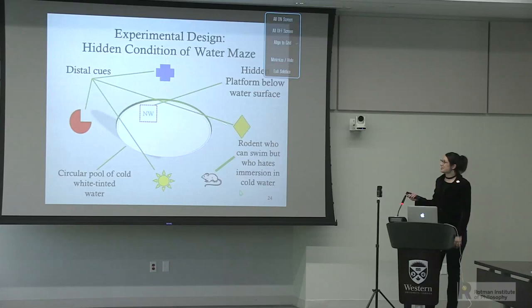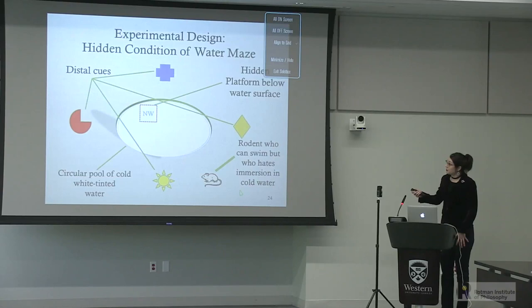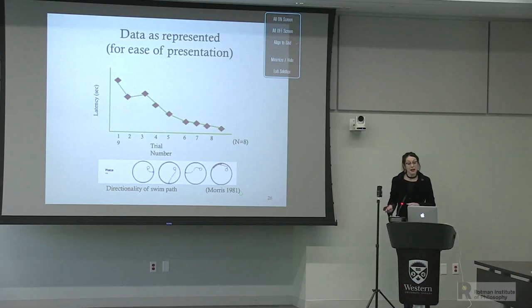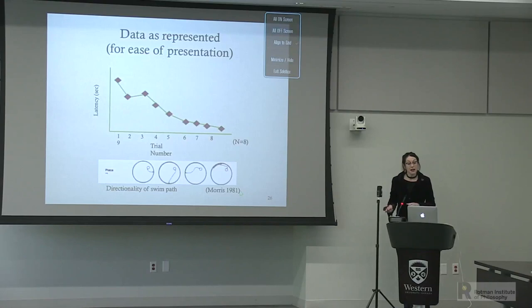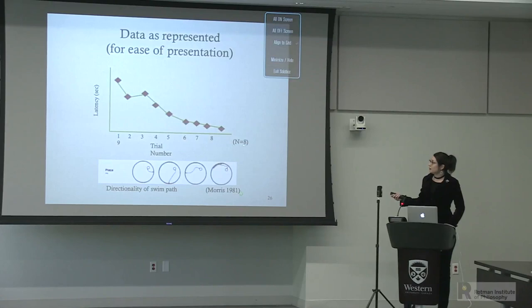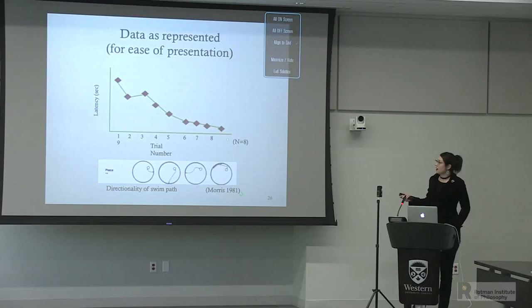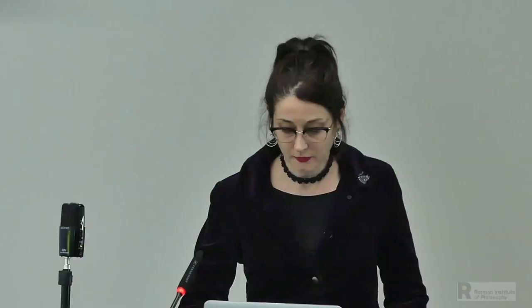Morris designed the Morris water maze: a circular pool filled with water dyed opaque, with a hidden platform placed in one of the quadrants of the pool and distal cues outside. The platform is hidden so that when the rodent is placed in the maze, it doesn't see it and has to swim around to find it. Running eight routes in 1981, Morris found that over a series of trials—with trial number on the x-axis and latency on the y-axis—there is a decrease in escape latency over eight trials, and after multiple sessions rats begin to beeline to the hidden target.